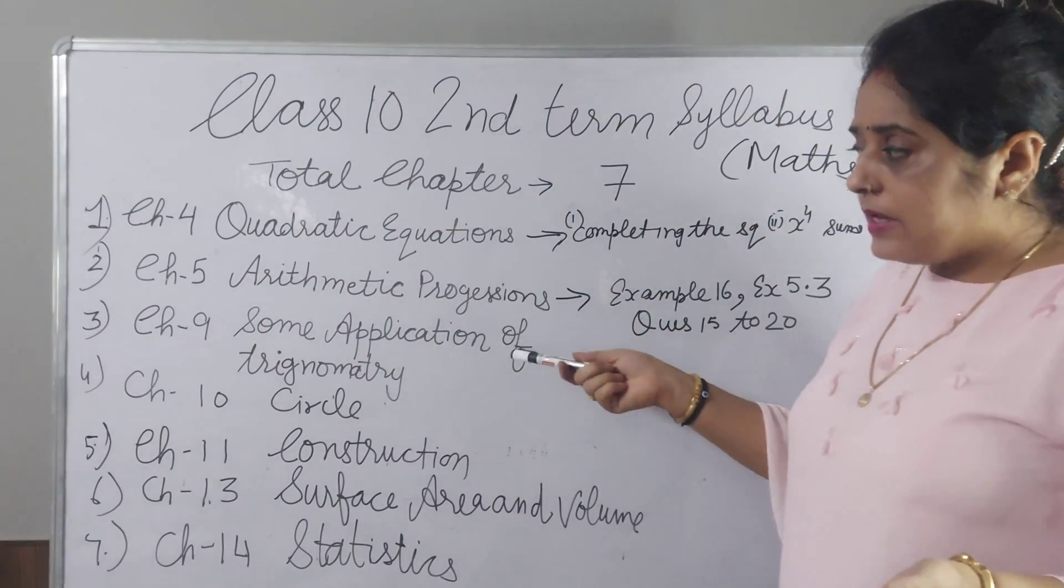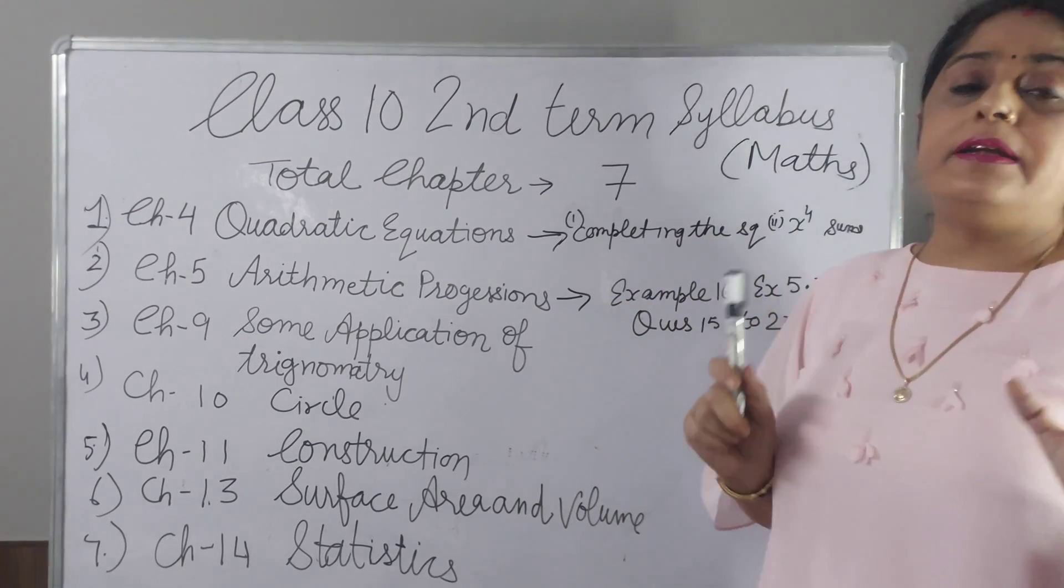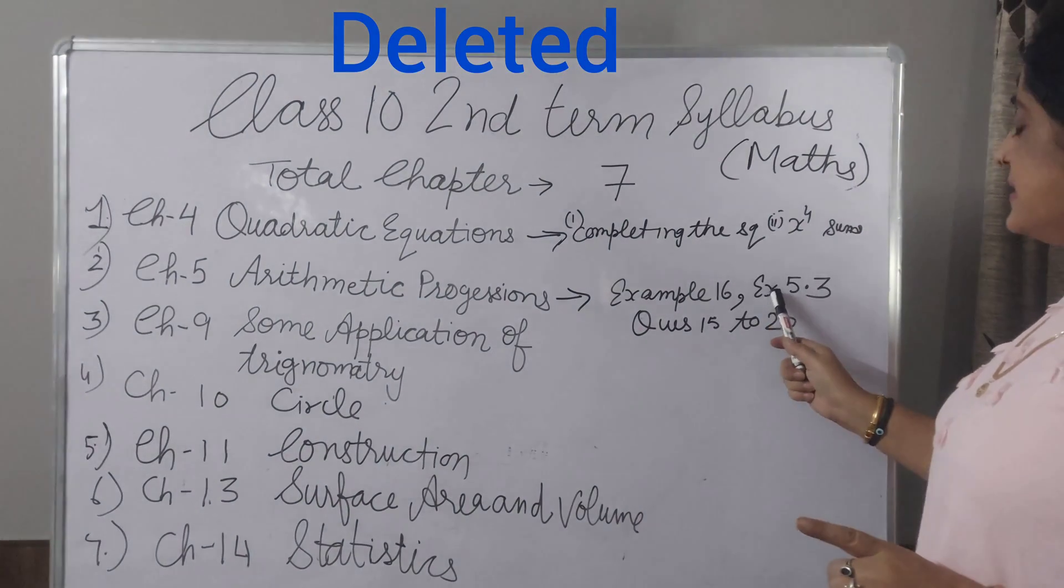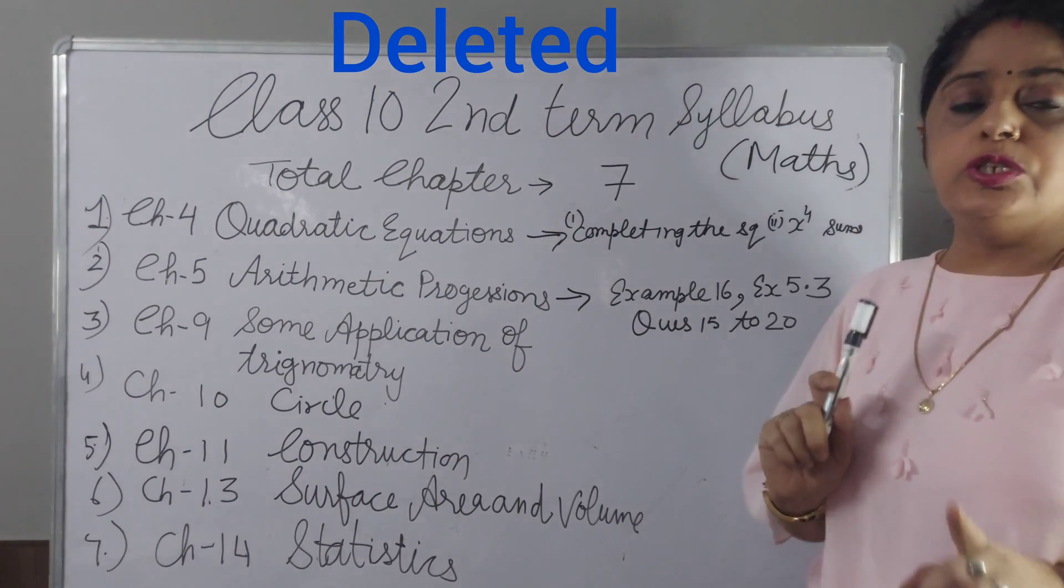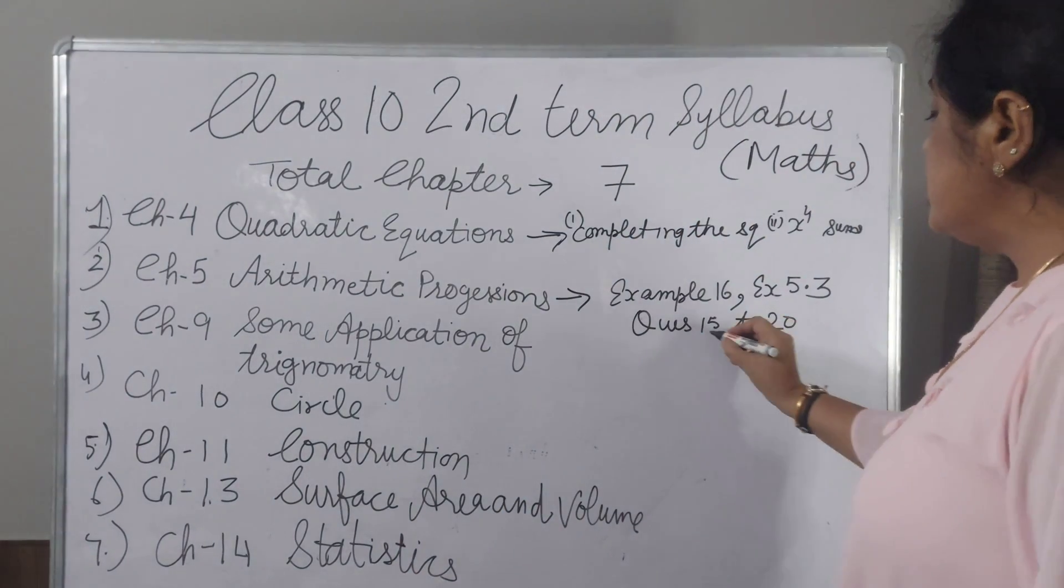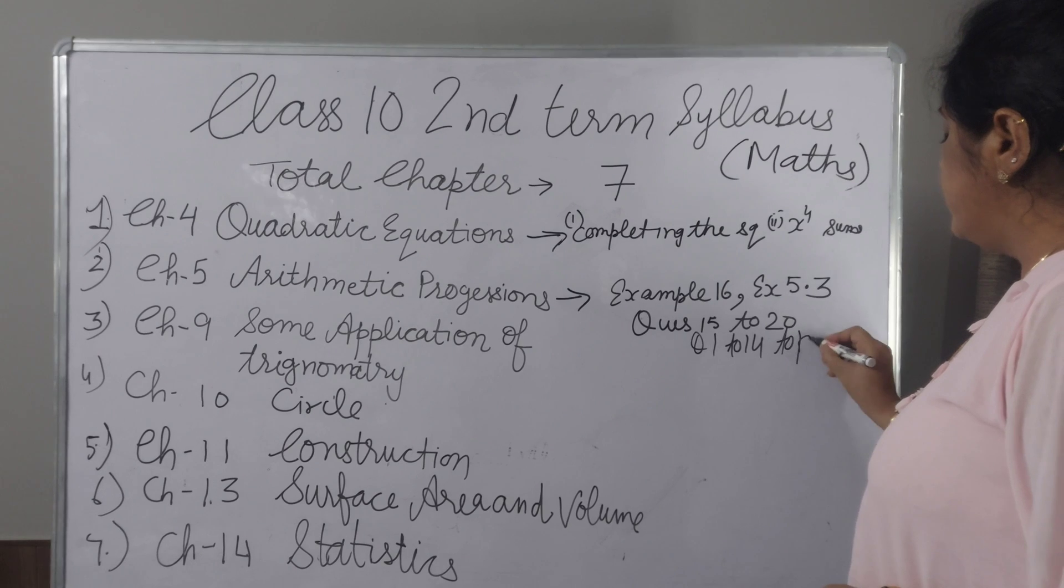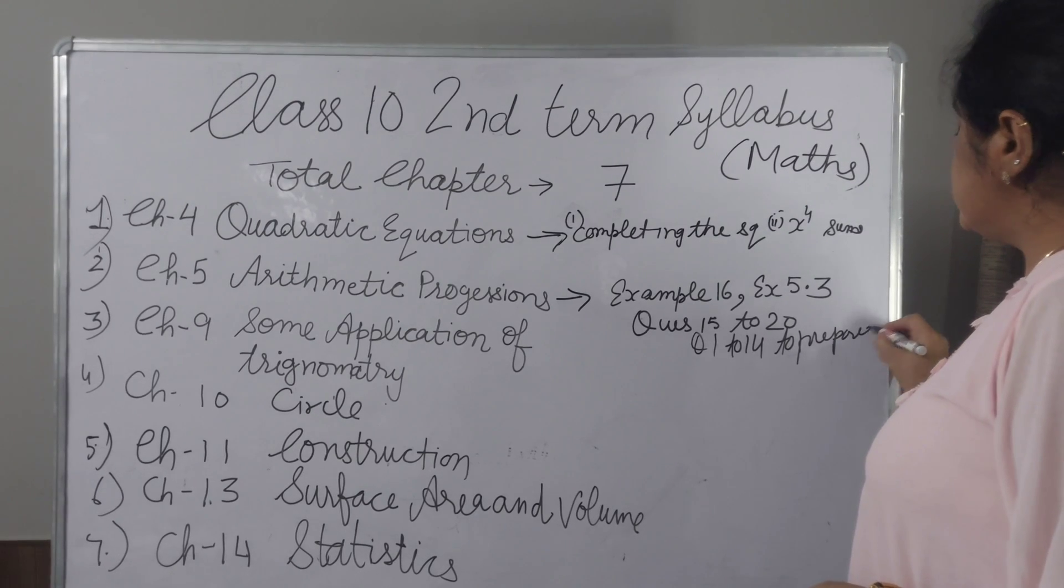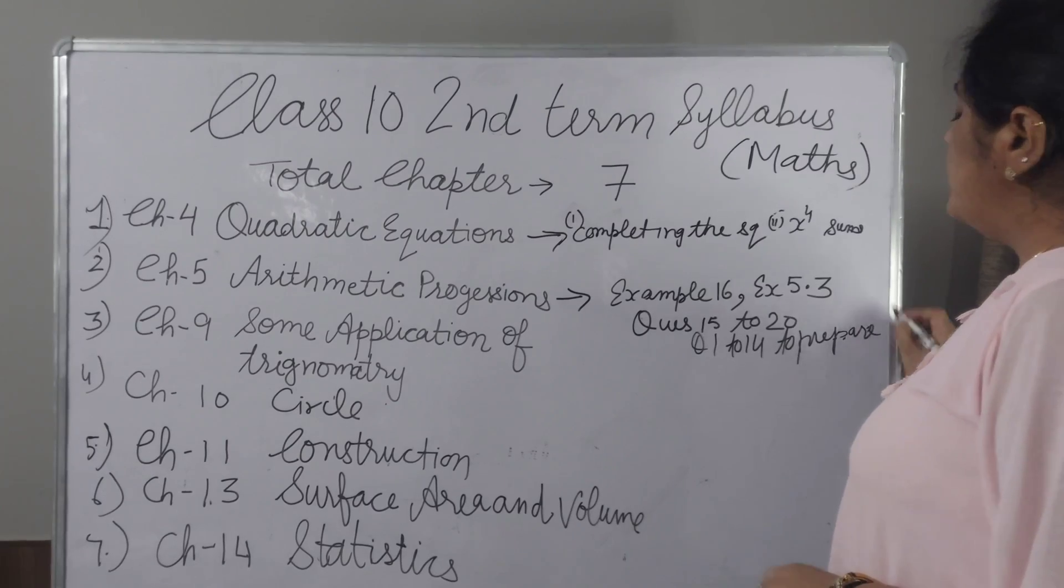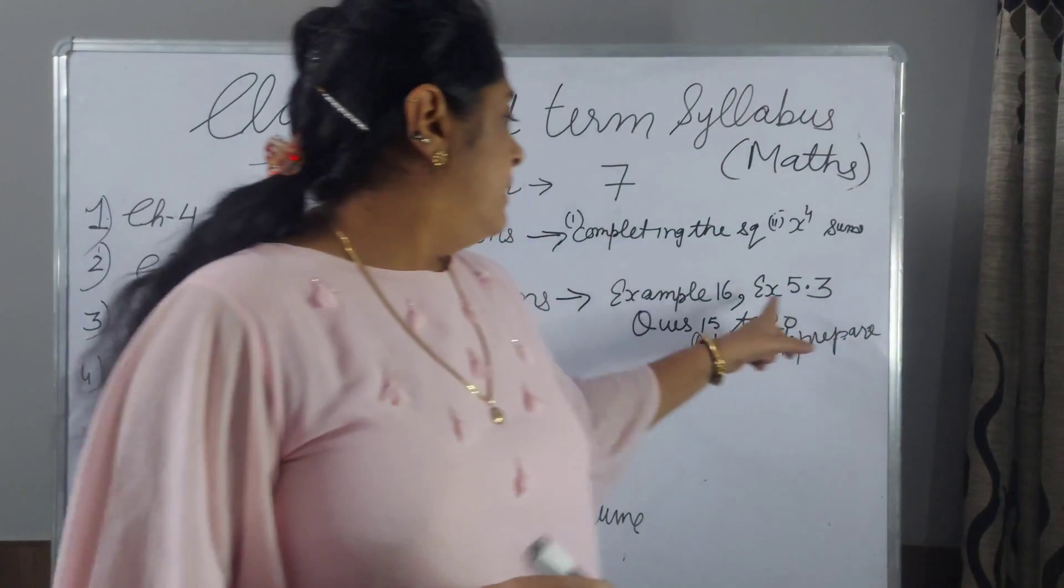Chapter 5 AP, you can say Arithmetic Progression. And here in this chapter example number 16 will not come. And exercise 5.3 question 15 to 20 will not come. But question 1 to 14 you have to prepare. Only questions 15 to 20 will not come and example number 16.